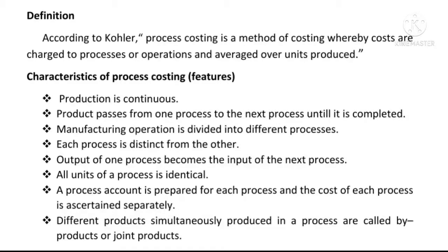Characteristics or Features of Process Costing: First, Production is Continuous. Next, the product passes from one process to the next process until it is completed. Next, Manufacturing Operations are divided into different processes. Each process is distinct from the other — one process and the third process are different. Next, the output of one process becomes the input of the next process.